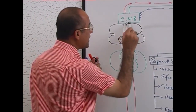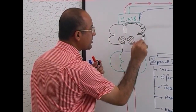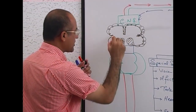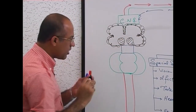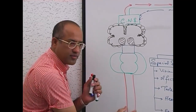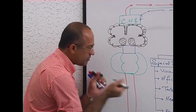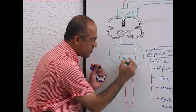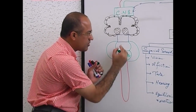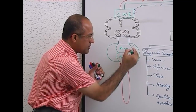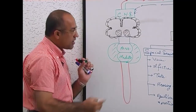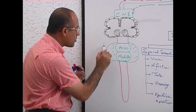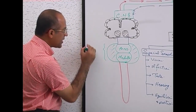The cerebral cortex is the grey matter present on the surface — I will discuss that later. Now, this is the spinal cord. What is this structure? Medulla. What is this structure? Pons. And what is this in the back? Cerebellum. So pons, medulla, and cerebellum as a group are called the hindbrain.